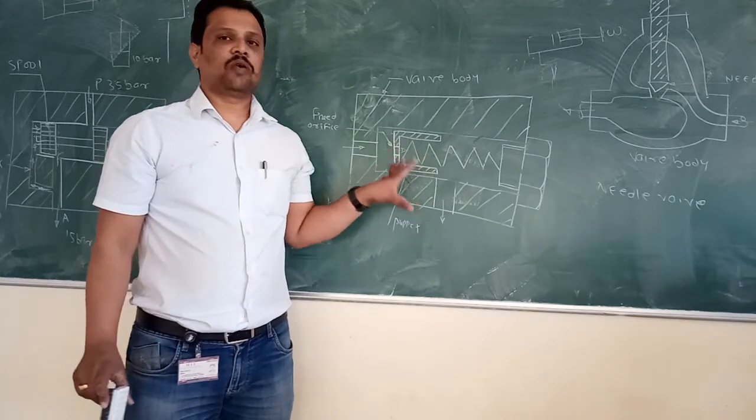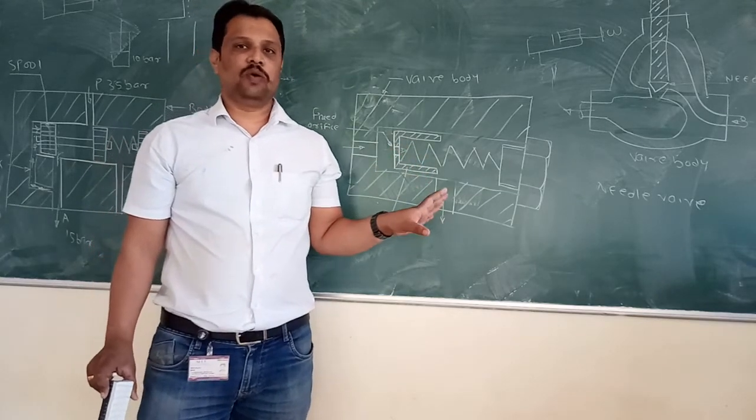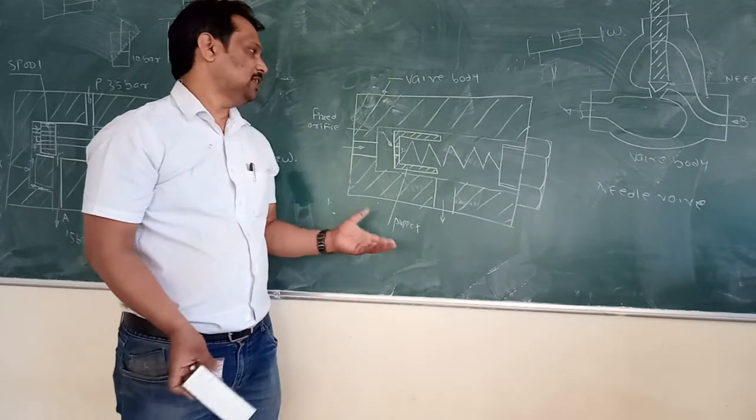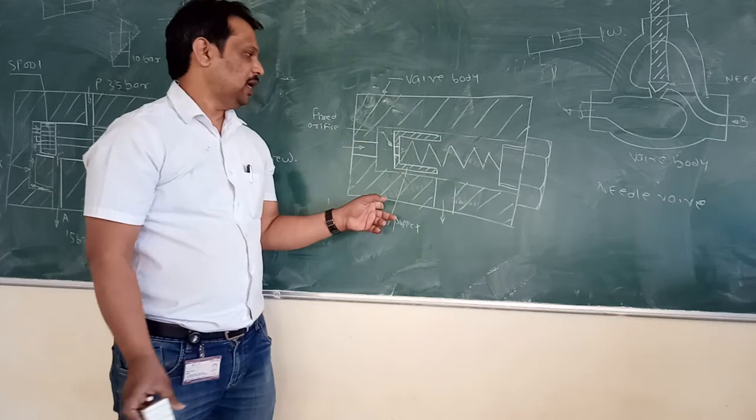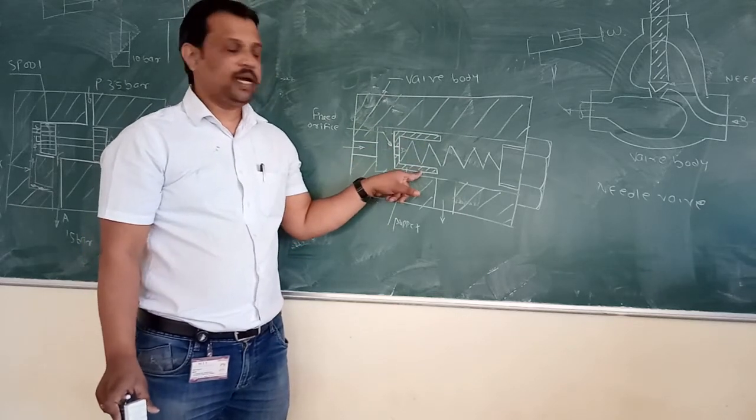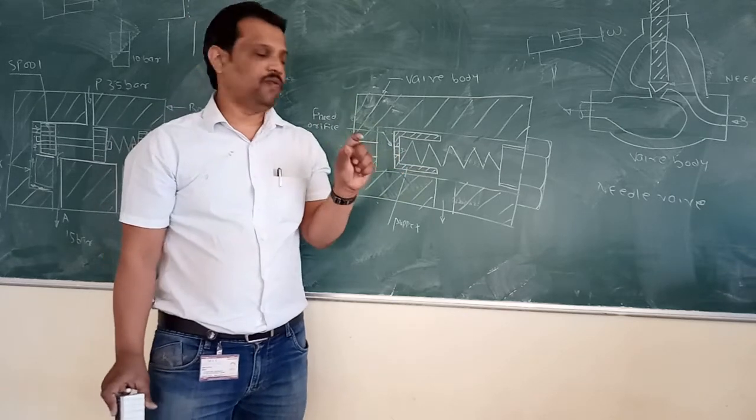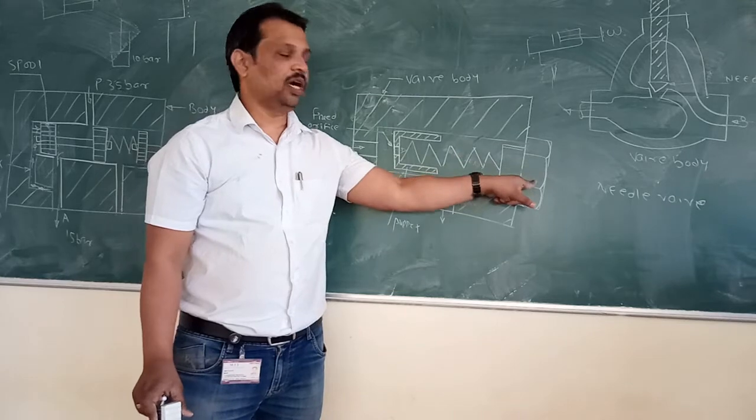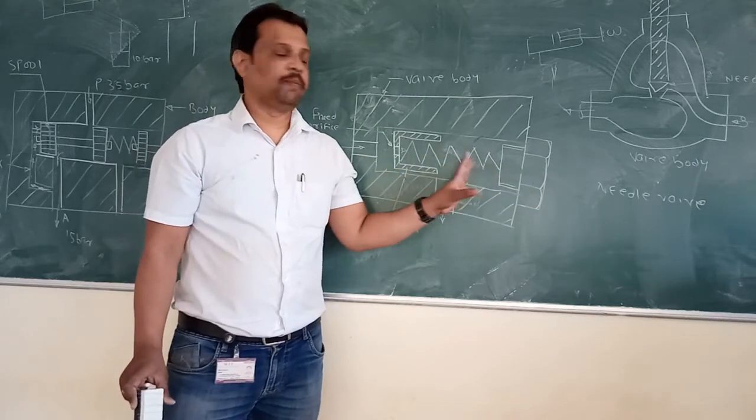This is Pressure Compensated Flow Control Valve. So, start with the construction. In construction, there is a valve body in which there is a hollow bore, in which hollow poppet with one fixed orifice. This poppet is mounted on spring and there is a nut for adjusting of this spring pressure.